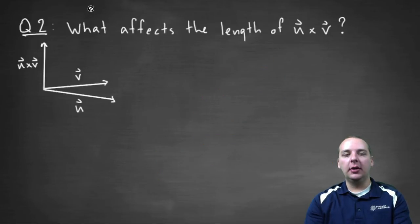Alright, the other thing I wanted to take a look at is how do you know how long the cross product is supposed to be? Because again, same as before, this vector sure is orthogonal to both u and v,